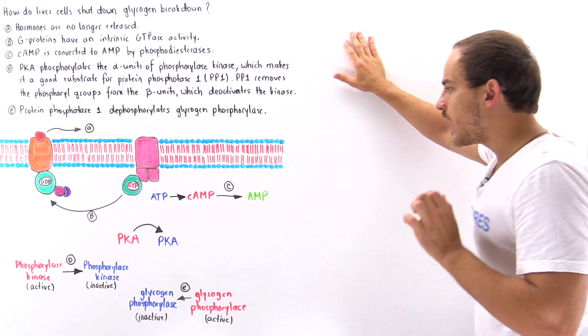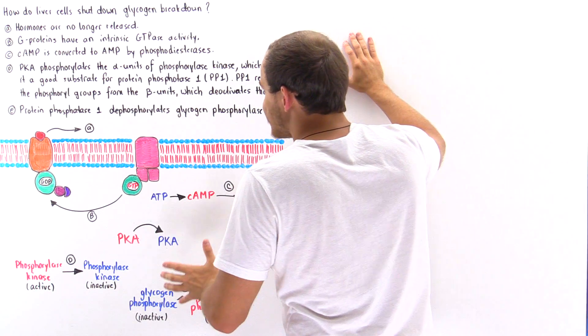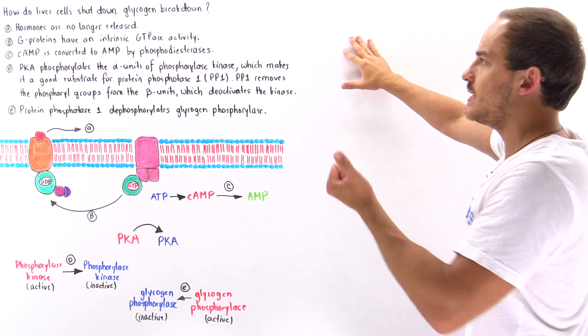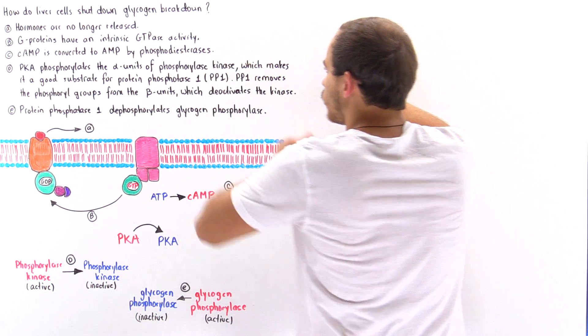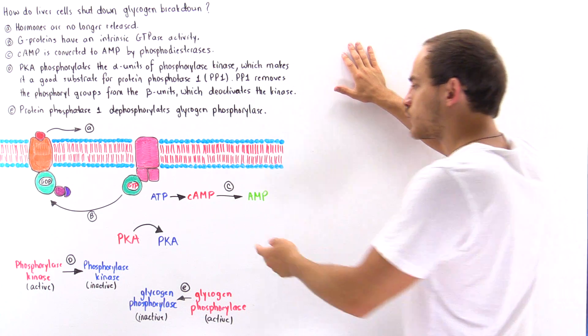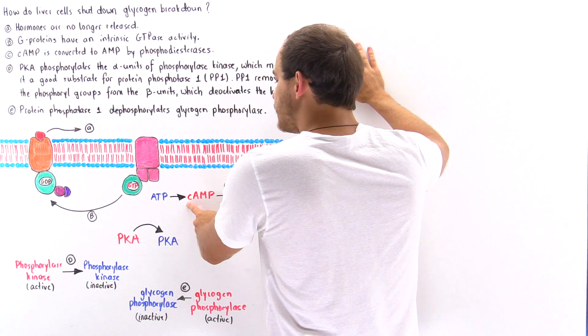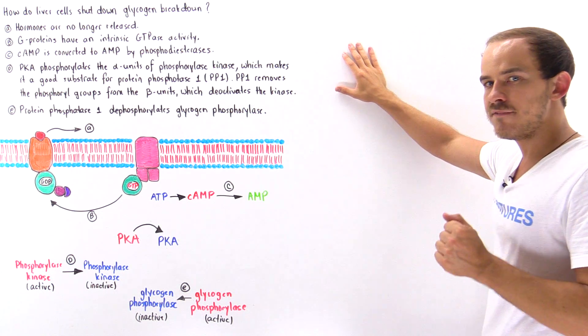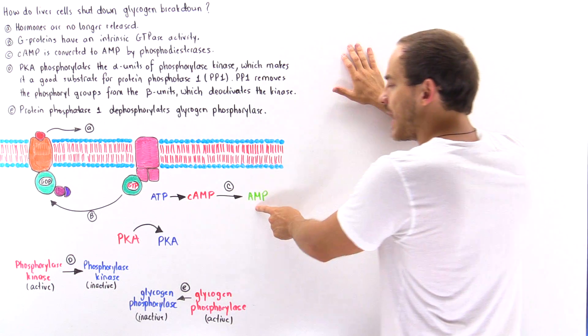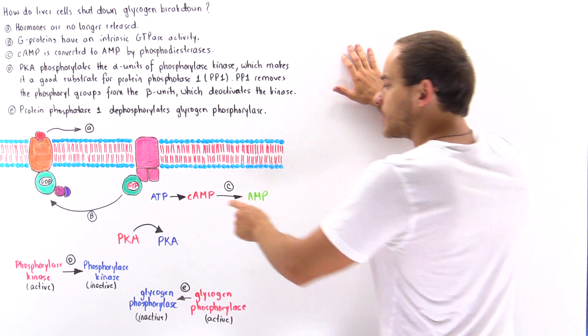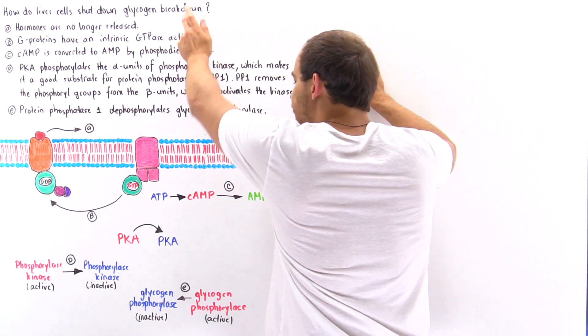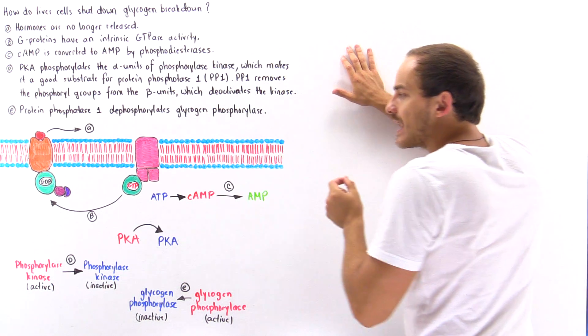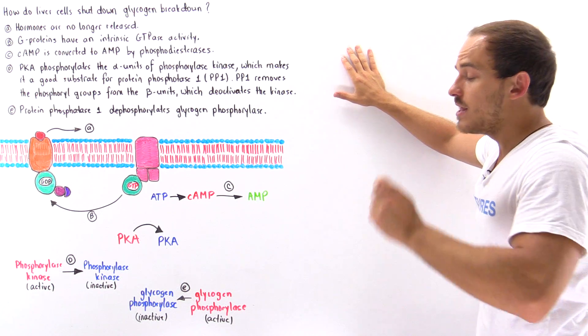In the cytoplasm we have these proteins known as phosphodiesterases, and these phosphodiesterases begin to transform the cAMP, cyclic adenosine monophosphate molecules, into AMP. Remember in the glucagon signal transduction pathway that initiates glycogen breakdown, the cAMP acts as a secondary messenger.